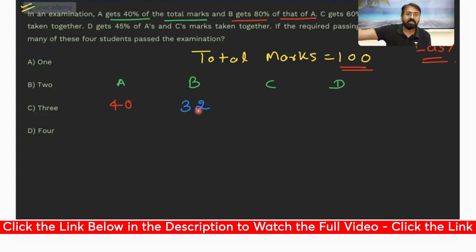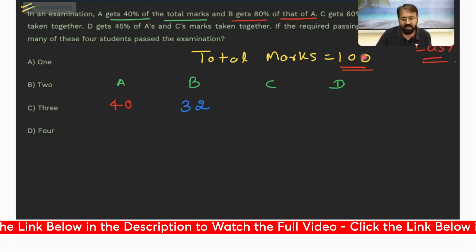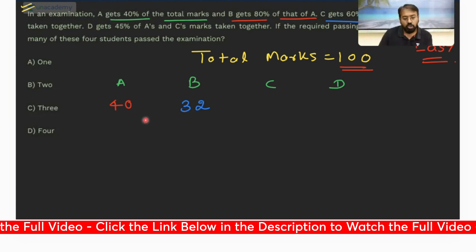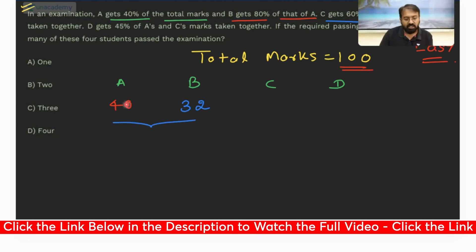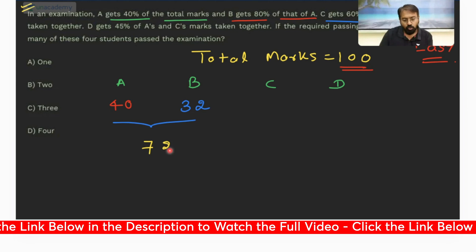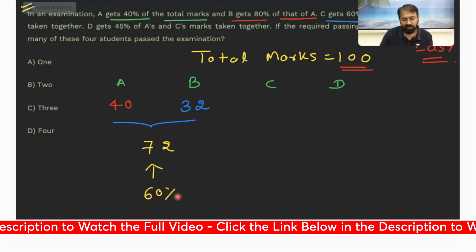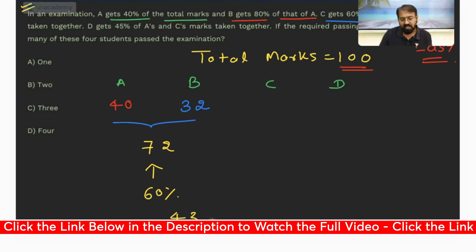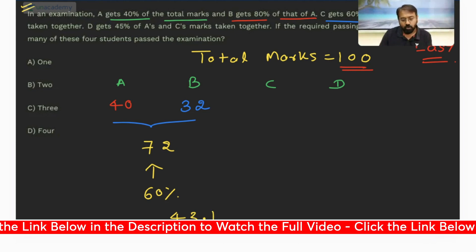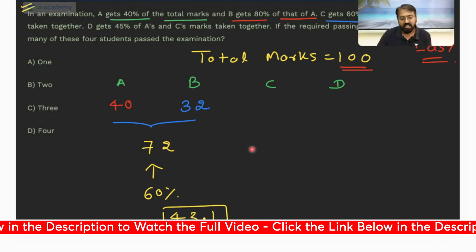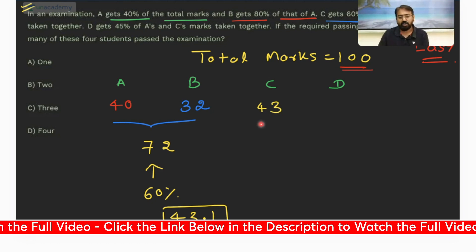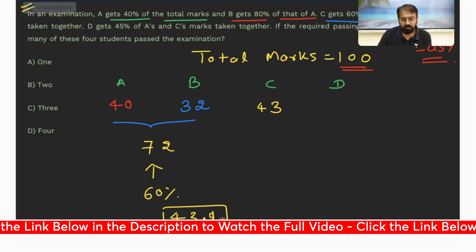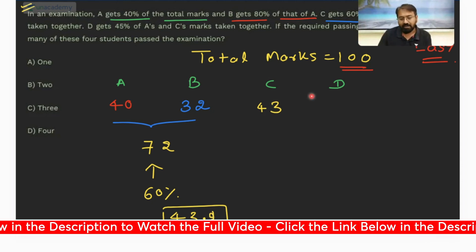So what is 80% of 40? It's going to be 32. Have you all understood this? A got 40 marks and B got 80% of 40 marks, that is 32 marks. Now C gets 60% of A and B's marks taken together. So what is A and B's total? It's 72. So what is 60% of 72? It will come out to be exactly 43.2, so C scored 43 marks.